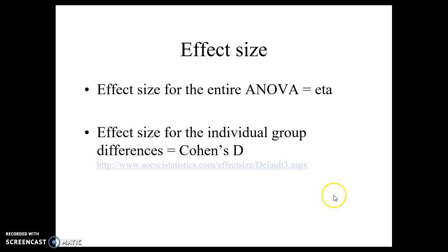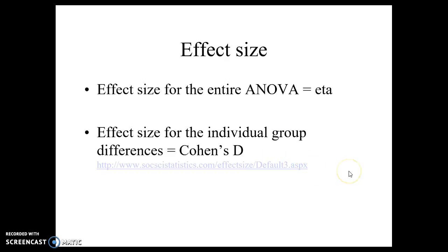Then we have to go back to effect size. We already have eta covered — we know how to find that. Eta is the effect size for the entire ANOVA together. But for each individual group comparison once we find a difference, we talk about its individual effect size, which is Cohen's D. We talked about this already from previous weeks, and we just click on the website, type in the values, and go through.